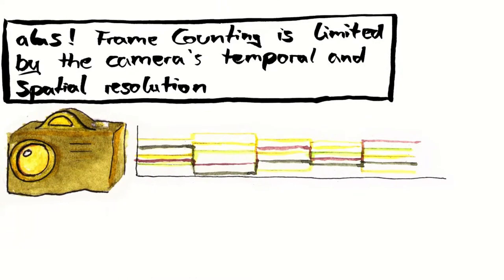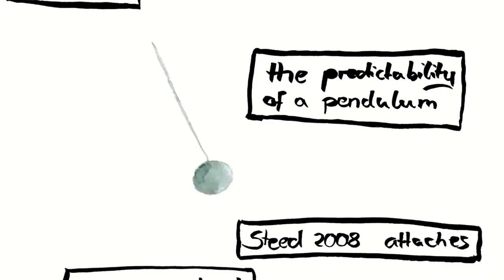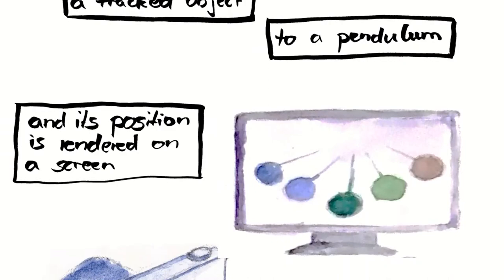Sine fitting overcomes problems caused by lacking camera resolution by using the predictability of a pendulum. Steed attaches a tracked object to a pendulum and its position is rendered on the screen. The camera records both the real and the virtual pendulum.